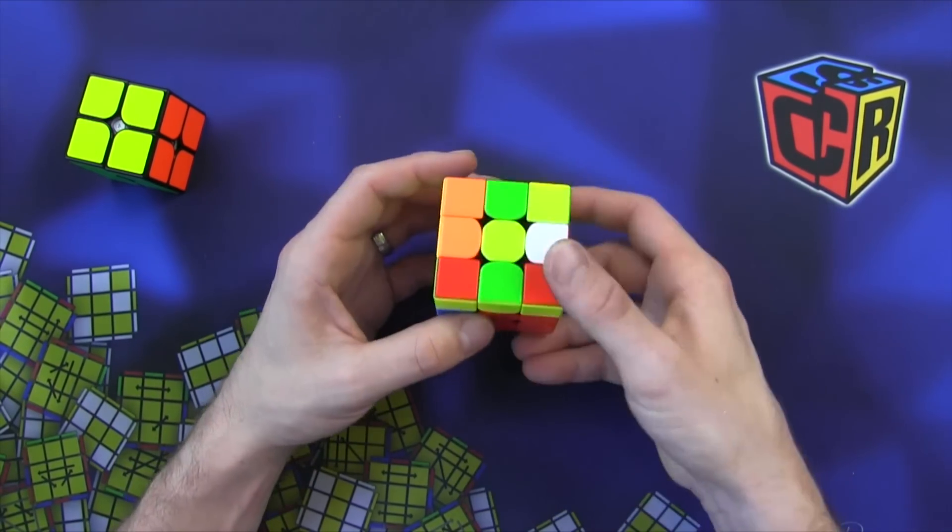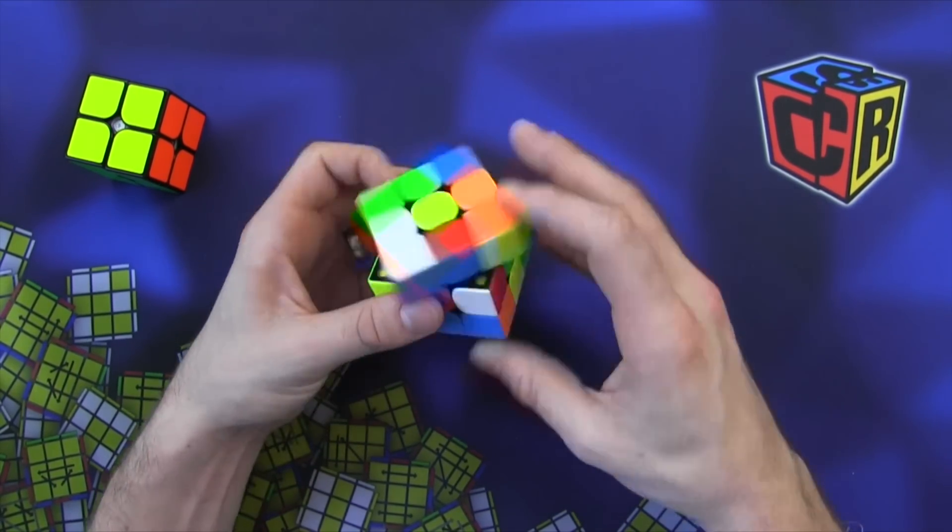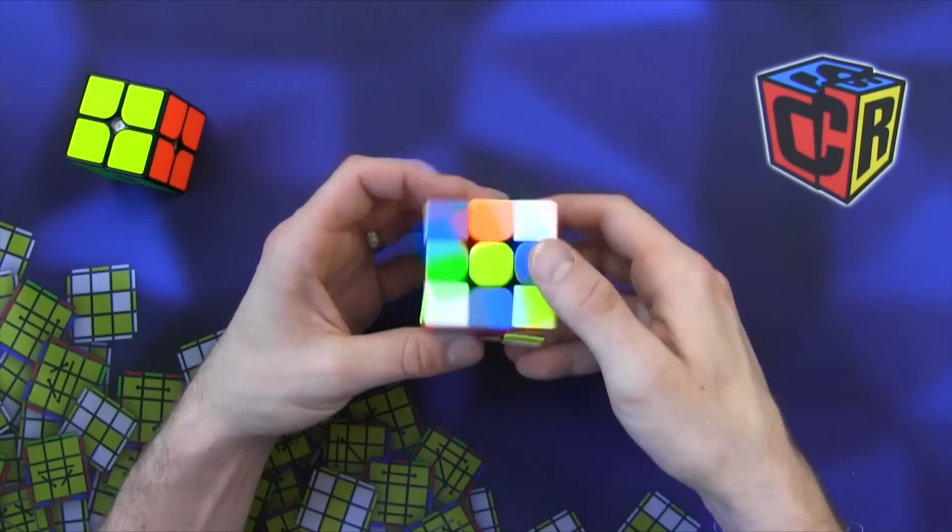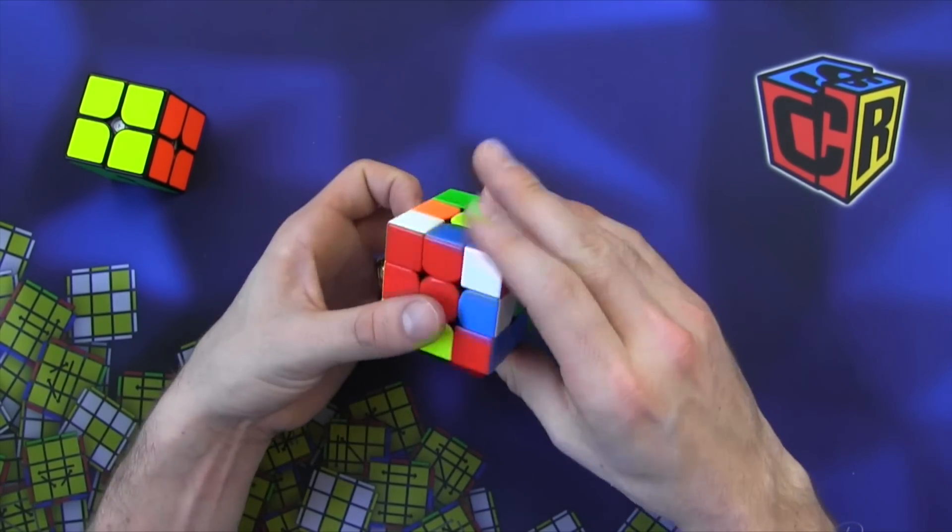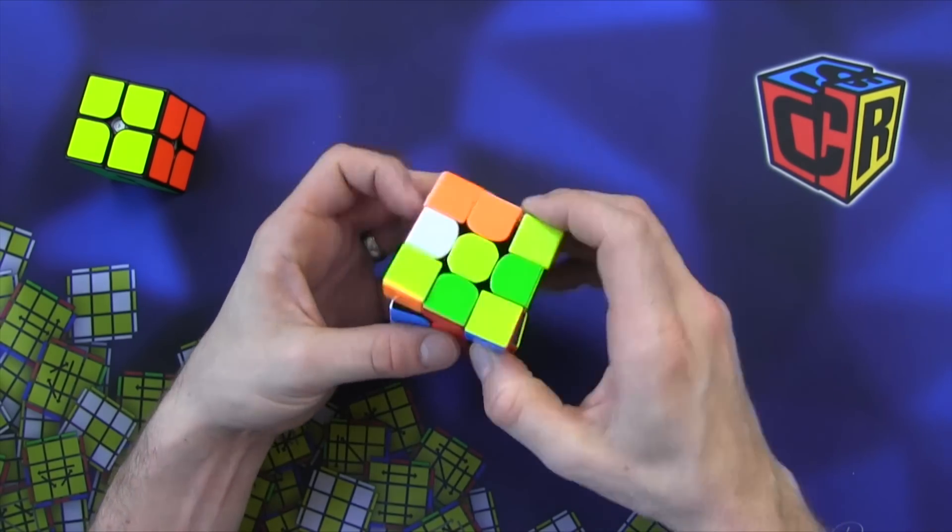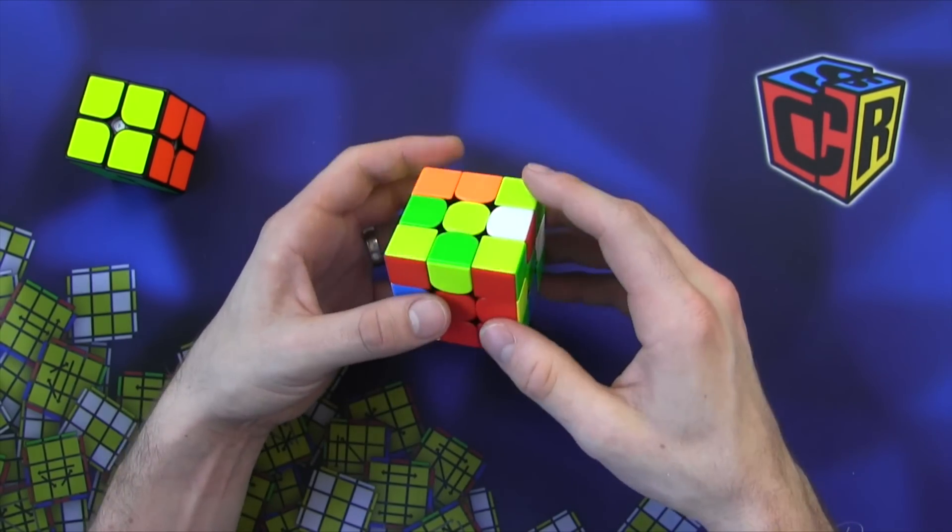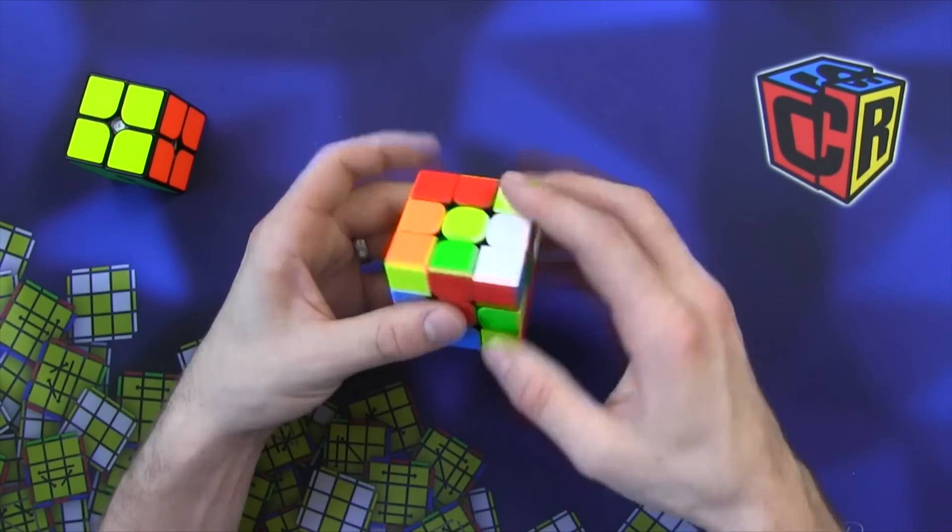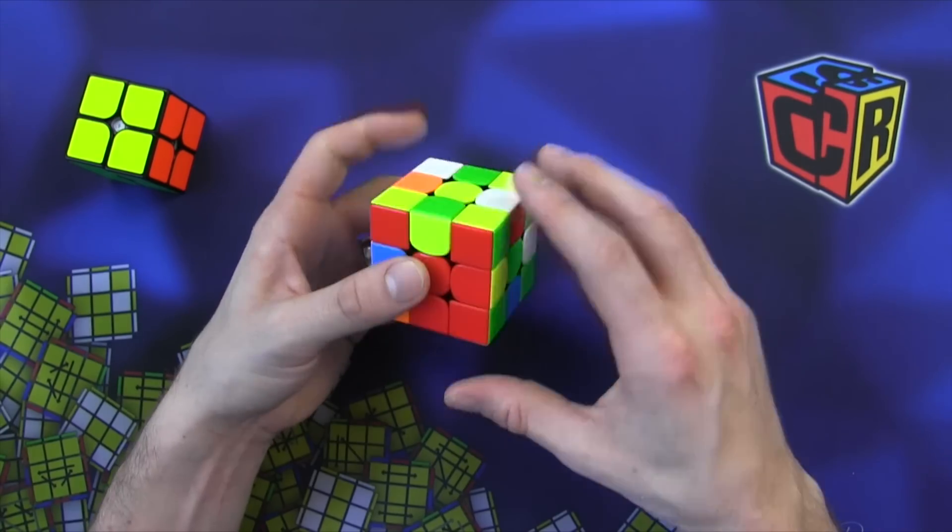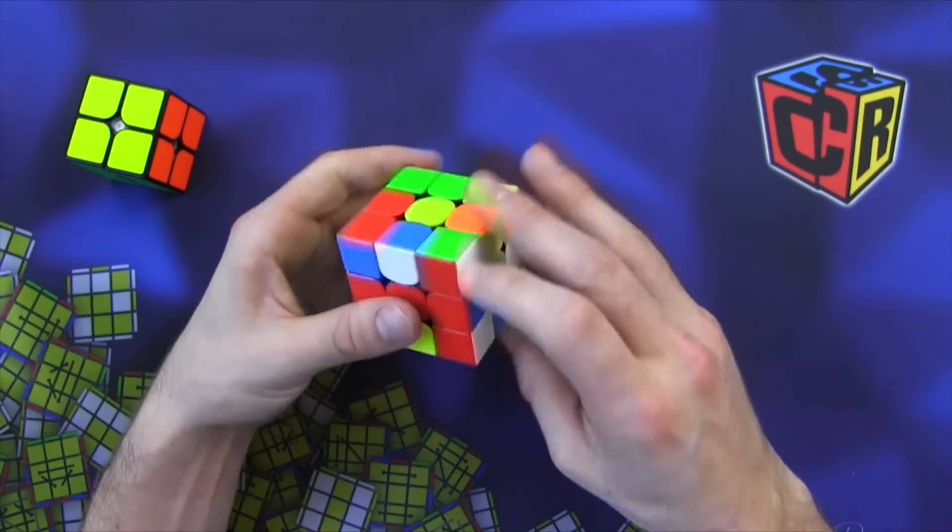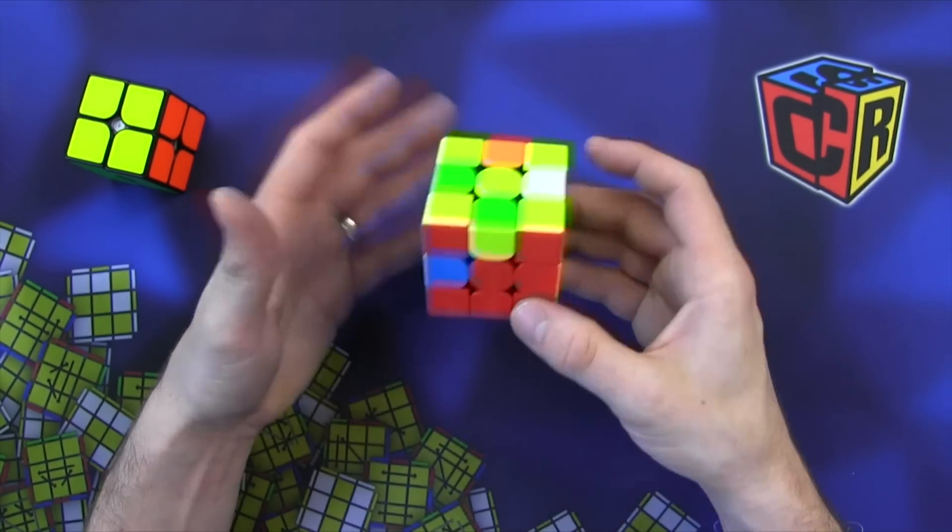So set up I, reverse the setup. R, reverse the setup. I, reverse the setup. And then it was H, reverse setup, U. There we go. And corners are solved.